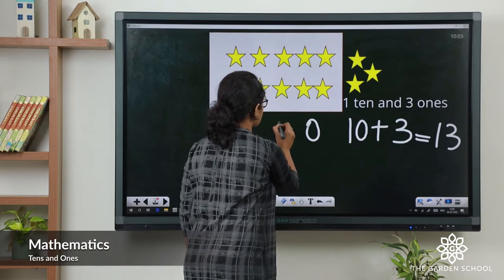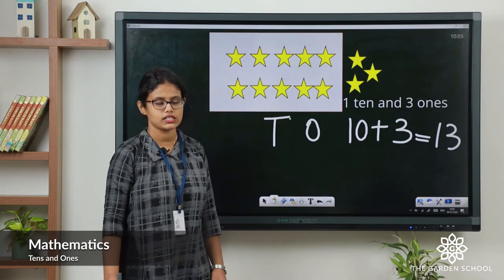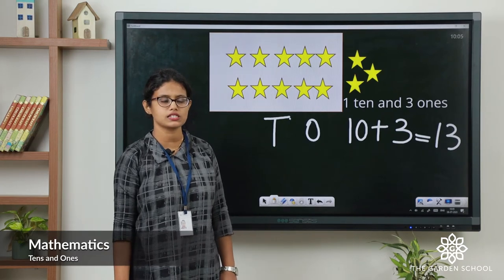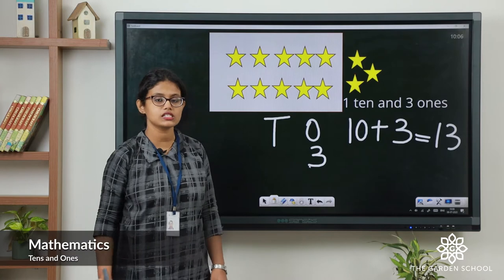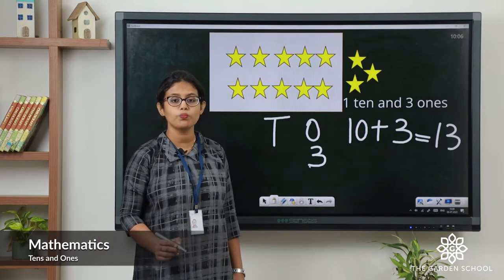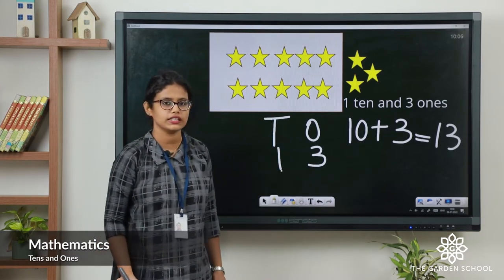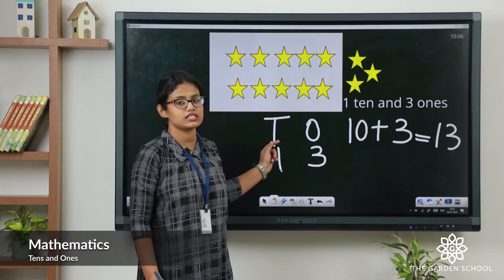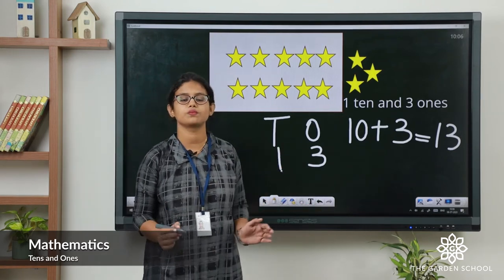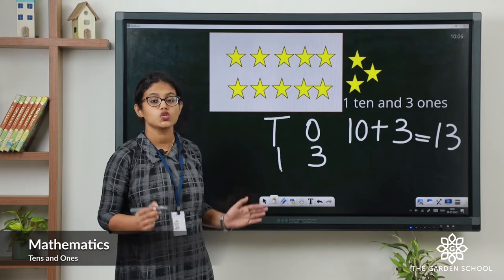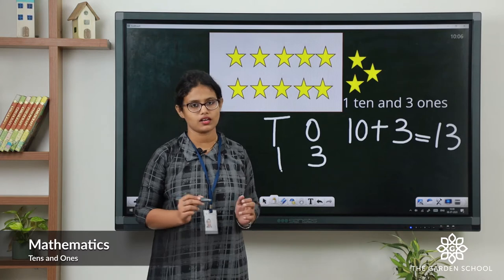O stands for ones and T stands for tens. In ones place how many stars? 3. In tens place, 1 group of 10 stars. So it makes number 13. 1 ten means 10 and 3 ones means 3 — it makes the number 13. So there were total 13 stars.